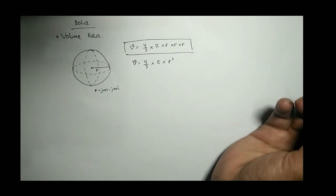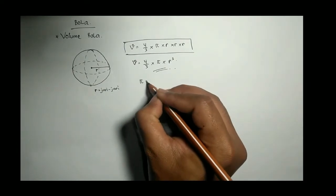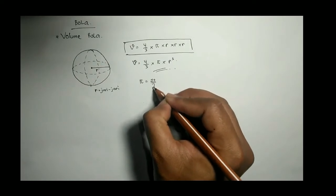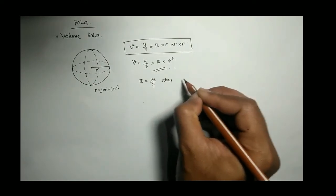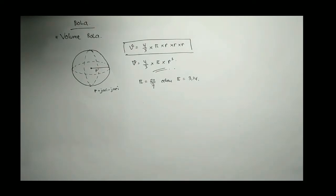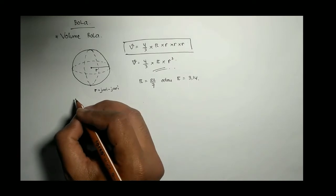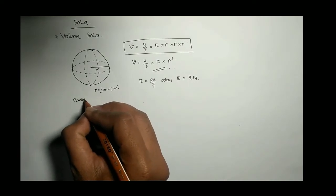Ini R pangkat 3 ya. Hampir sama seperti lingkaran. Ini diingat-ingat, dihafalkan rumus bola ya. Jadi 4/3 dikali π kali R pangkat 3. Kalau rumus luas lingkaran π kali R kuadrat ya, kalau ini rumus volume bola.